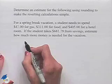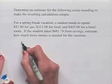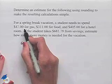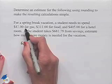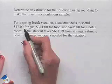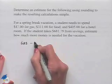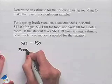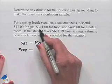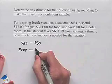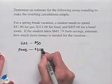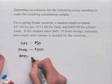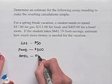Let's write down each individual value. We have that our gas is $47. We want to estimate by using rounding to make the calculation simple, so I'm going to round $47 up to $50. We have our food, which will be $311 — I'm going to round that down to $300. And we have a hotel room for $405, which can be rounded to $400.